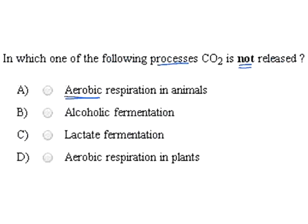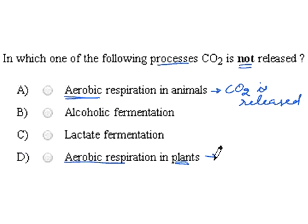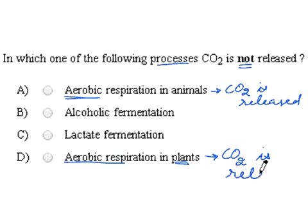So in aerobic respiration in animals, carbon dioxide is released. Option D also says aerobic respiration but in plants. In plants, aerobic respiration takes place in the same manner — glucose is broken down in the presence of molecular oxygen, releasing carbon dioxide. So here also, carbon dioxide is given out.